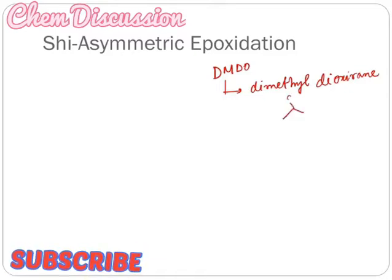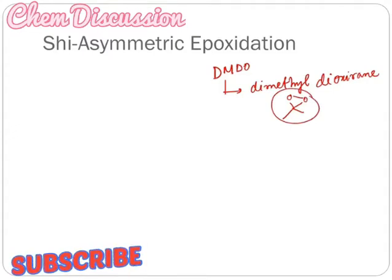Its structure looks like this. Now using DMDO, we can synthesize epoxide under mild conditions and without any nucleophilic component.